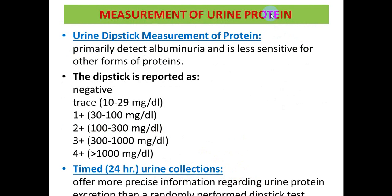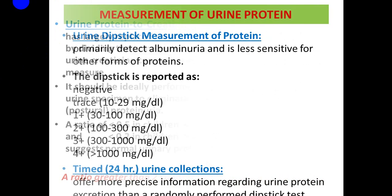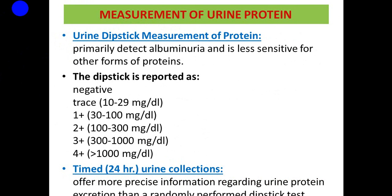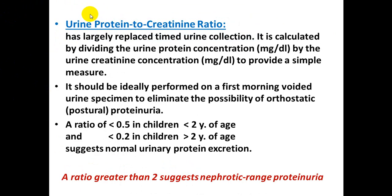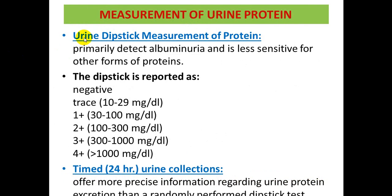Measurement of urine proteins: There are three methods for detection of protein in the urine. The first is urine dipstick, which primarily detects albumin in the urine and is less sensitive for detecting other types of protein.